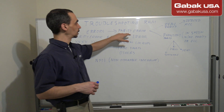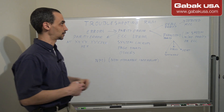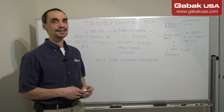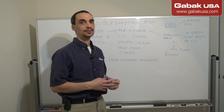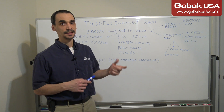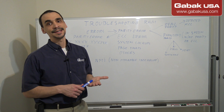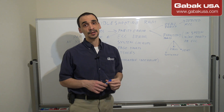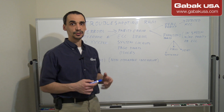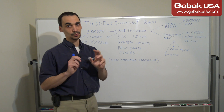We have two types of errors: the real parity and the phantom parity. The real parity is when you have some kind of issue with the RAM — the memory controller detects that the ECC or the parity of the memory is creating an error.